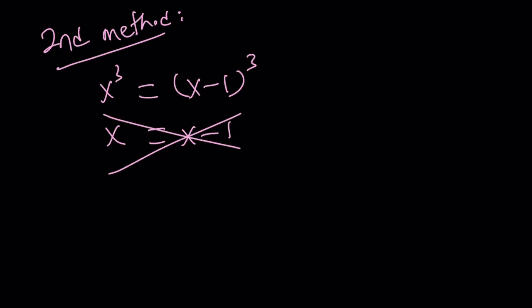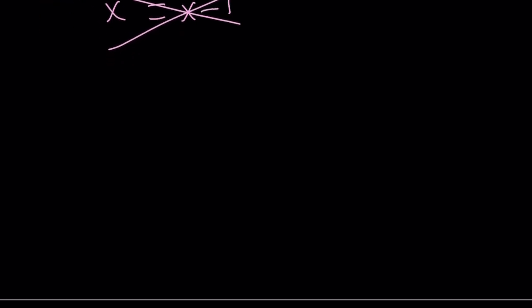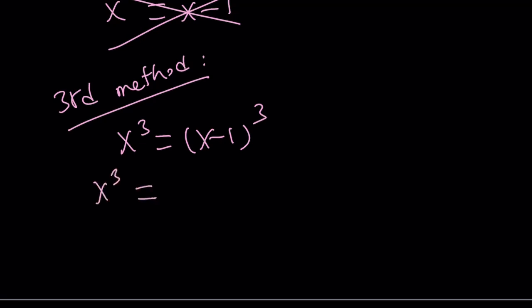So let's go ahead and take a look at the third method. The third method should be the most obvious. Just expand it, right? So we have x cubed equals x minus 1 cubed. If you expand x minus 1 cubed using the binomial theorem, you're going to get x cubed minus 3x squared plus 3x minus 1.